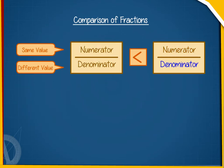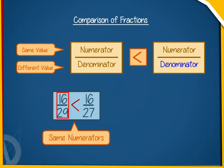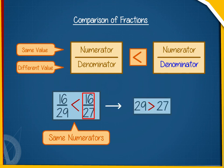If two fractions have the same numerator, then the fraction with the greater denominator is smaller. For example, 16/29 is less than 16/27, because 29 is greater than 27.